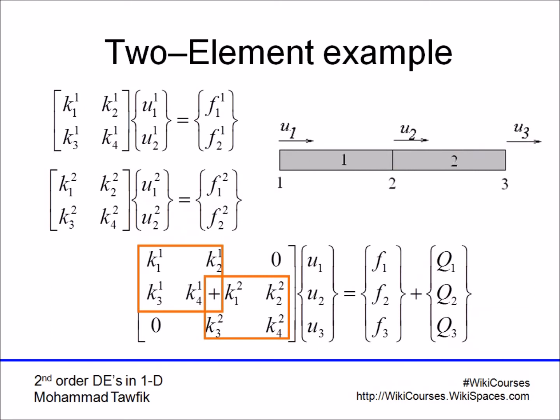We're going to present this without proof. We will add up the equations that contain equal values of u. So we add the second equation of the first element to the first equation of the second element.